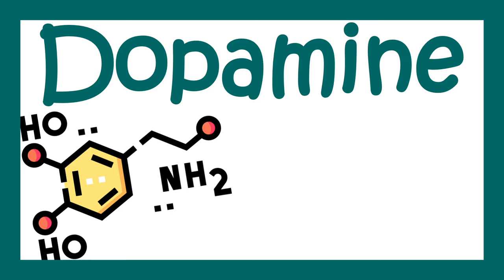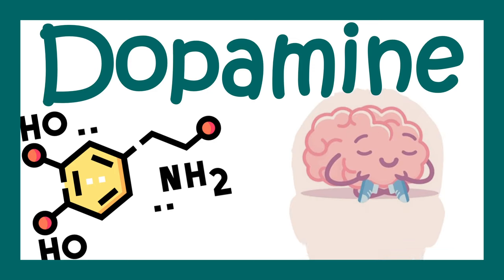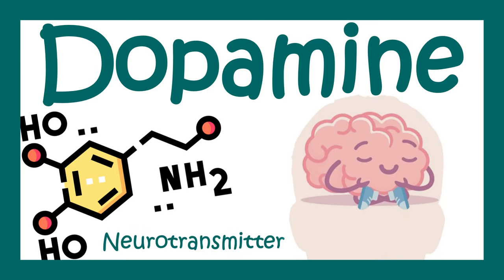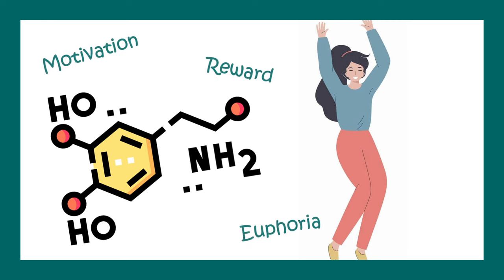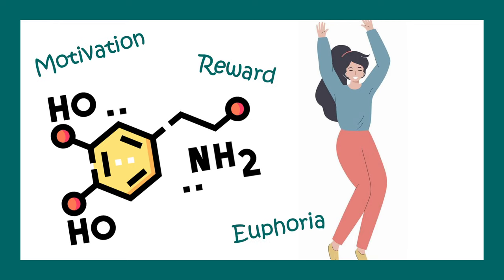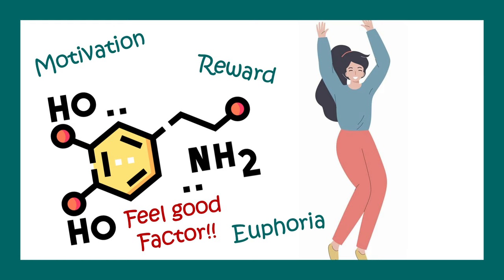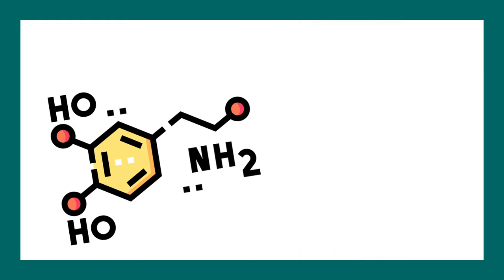In this video we'll talk about dopamine, which is a neurotransmitter. Dopamine is associated with motivation, reward, and euphoria — it's kind of like a feel-good factor. Dopamine is a monoamine.